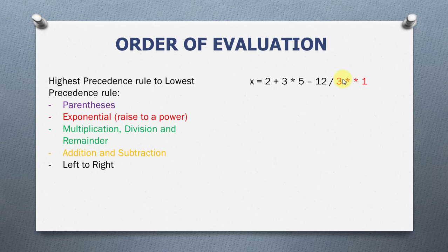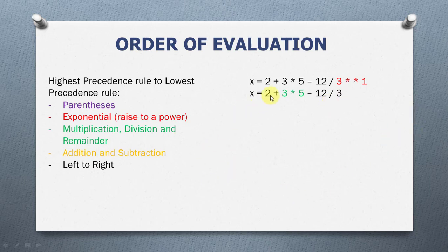So, 3 raised to the power of 1 is going to give us 3. Now we have 2 plus 3 times 5 minus 12 divided by 3. Multiplication and division have the same level of precedence, so which one will Python evaluate first? This is where left to right comes in. Moving from left to right, which comes first — the multiplication operator or the division operator? It is the multiplication operator, so we're going to do the multiplication first.